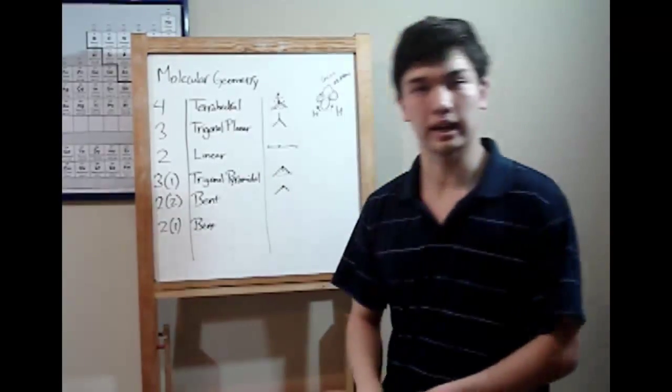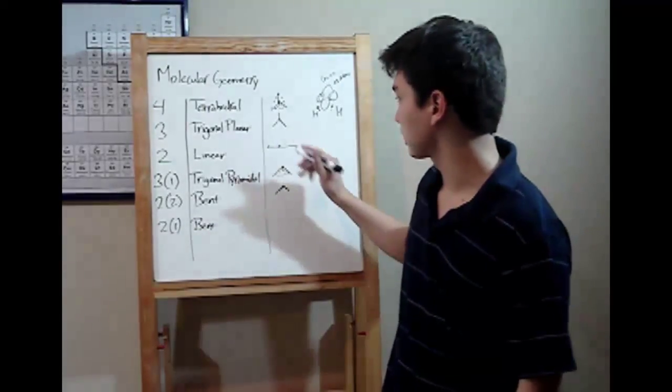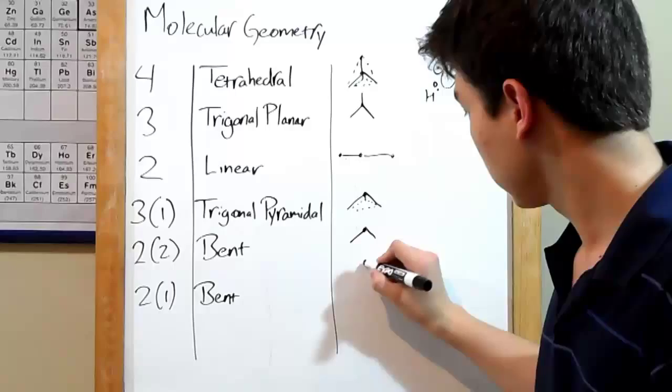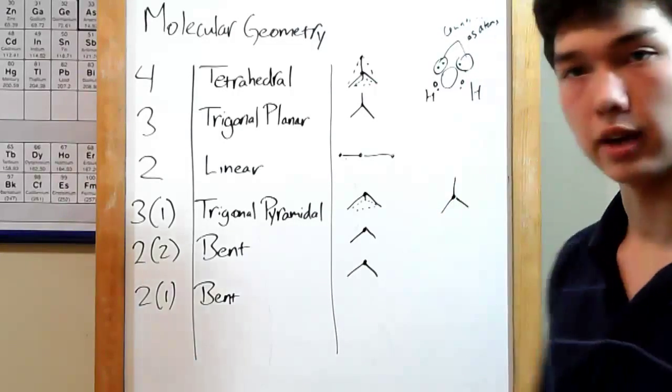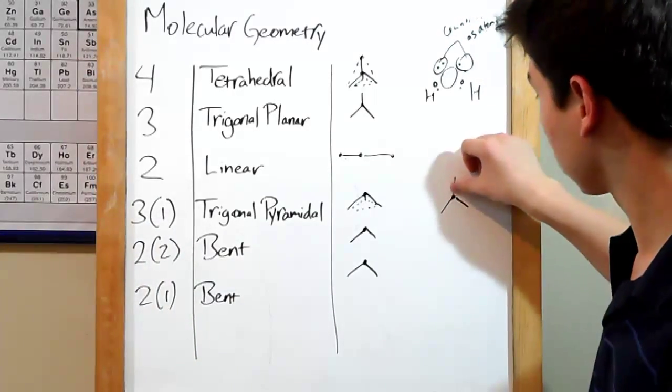There's also one other way to get bent, and that's working from the trigonal planar. That one's pretty clear. When you've got a trigonal planar like this, in one lone pair, you just erase one leg. You've got it bent.